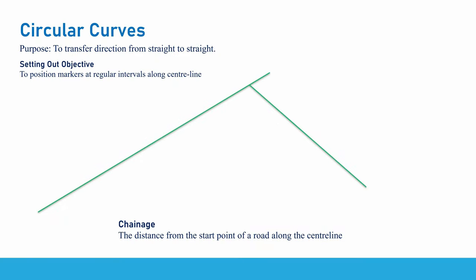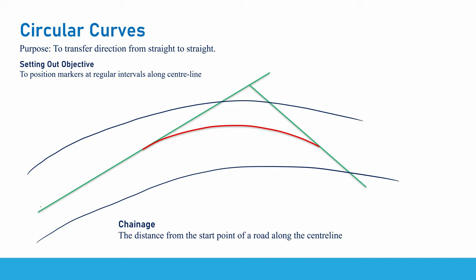Let's start with the purpose of circular curves. Curves are used to form smooth transitions between straight portions of roads or railways — in other words, to transfer direction from straight to straight. In the design stage of a road or railway you will have straight lines, and the aim of circular curves is to transfer direction smoothly using a circular curve. The aim of setting out is to position markers at regular intervals along the center line of the road.